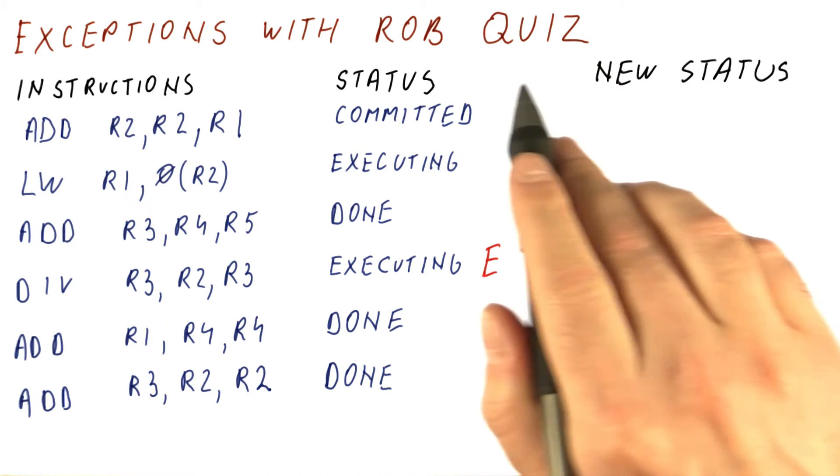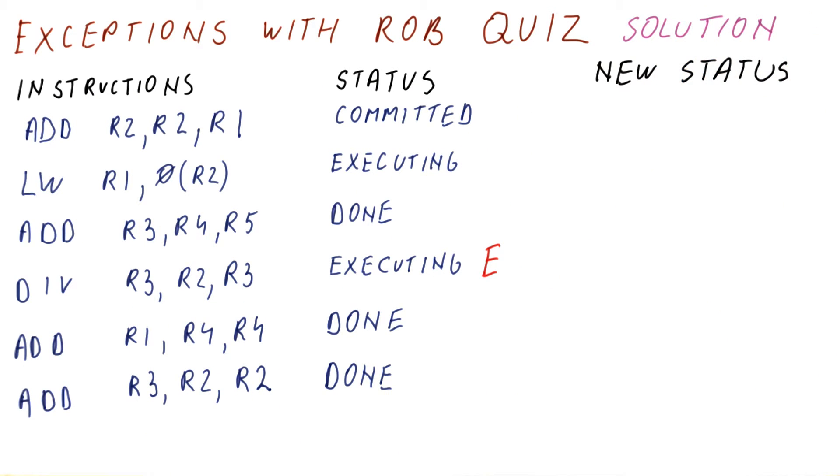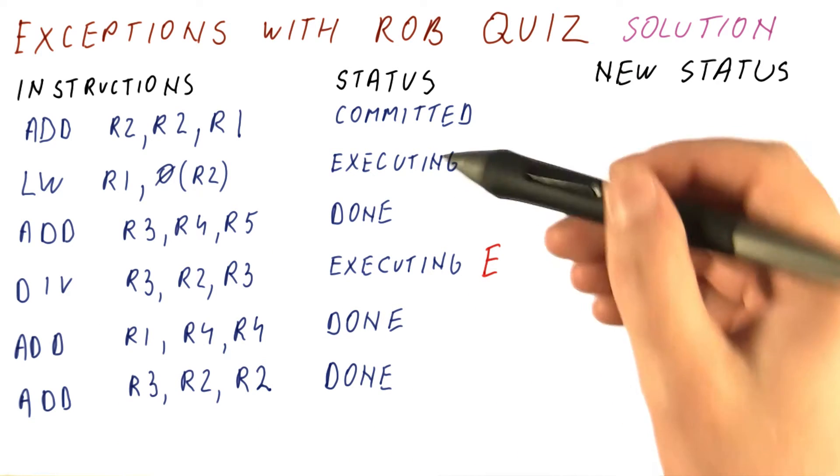So let's look at our exceptions with ROB quiz solution. At the point where this divide has an exception, this is what we had.